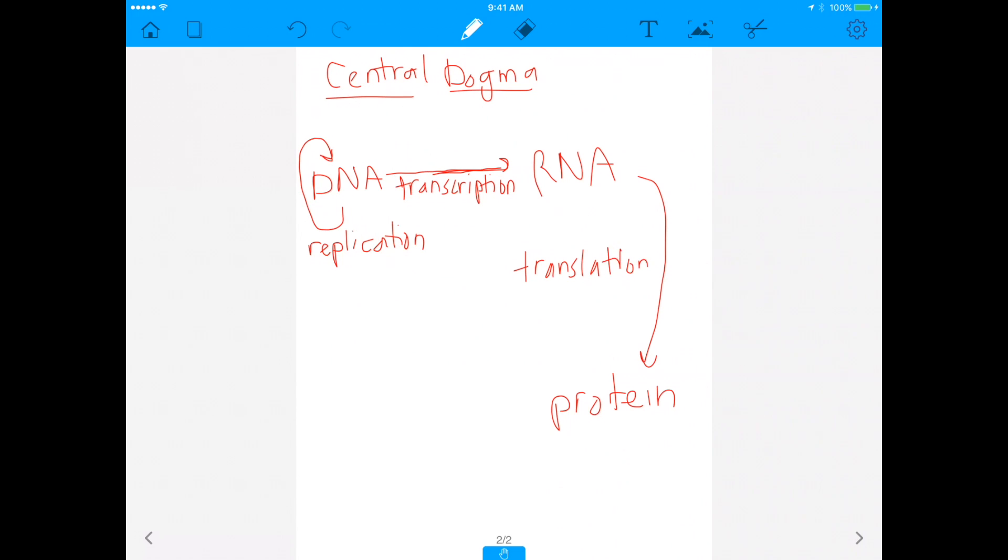And believe it or not, there's actually—this was the original central dogma, but today, there's another thing added onto this. And that other thing is this process of RNA to DNA. You can actually go from RNA to DNA today. And that RNA to DNA process is called reverse transcription. And some of you may know this from HIV, because HIV has an RNA genome, but then it reverse transcribes it to go back to DNA. So this is the general gist of the central dogma that we have today.